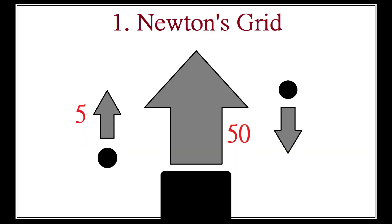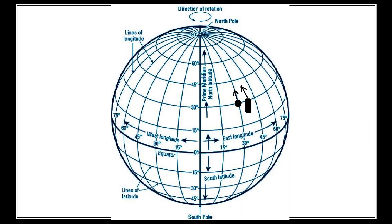If velocity is relative, then how did I know that I am moving at 5 miles an hour while the car is moving at 50 miles an hour? What are those speeds in reference to? They are in reference to the Earth, which is taken to be moving at 0 miles per hour.